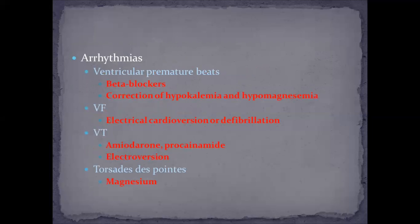Moving on to various arrhythmias: we should first correctly identify the type of arrhythmia. If the patient has ventricular premature beats, drugs like beta blockers should be used, and we should look for electrolyte imbalances — if hypokalemia or hypomagnesemia is present, correct it promptly. For ventricular fibrillation, electrical cardioversion or defibrillation therapy should be used.